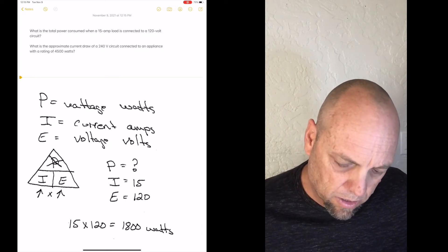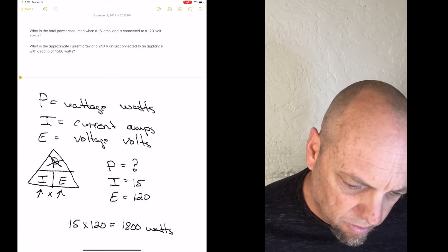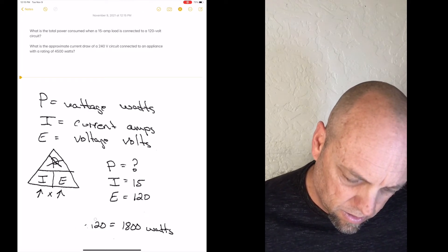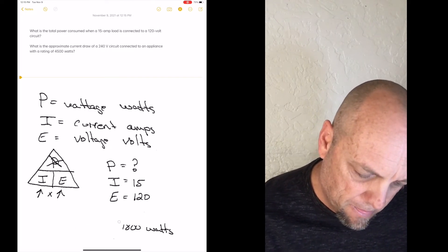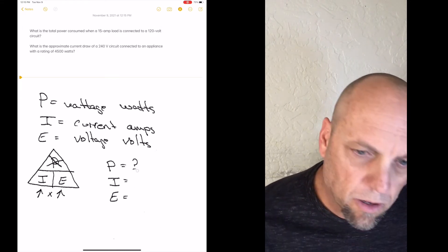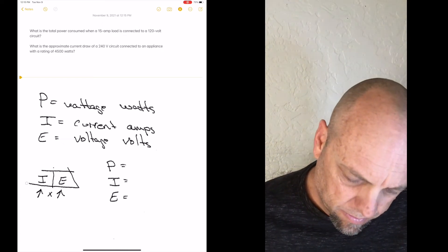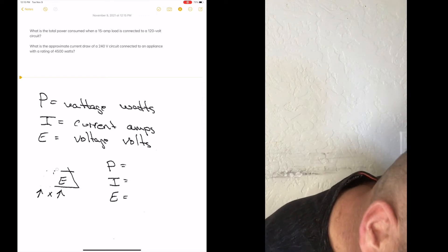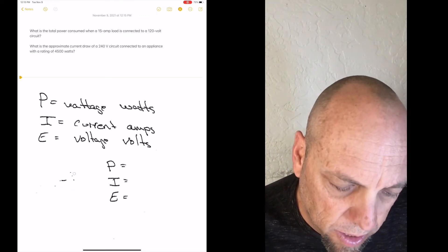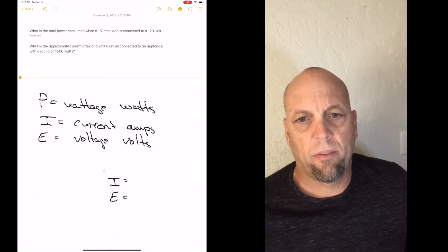So right there is how we use the pie triangle. Now let's go to the next one if I can figure this one out. I'll get my screen to come up. Alright, let's just erase all that. Alright, let's go to our next question there. What is the approximate current draw of a 240 volt circuit connected to an appliance with a rating of 4500 watts?